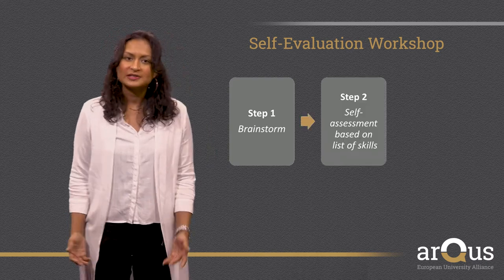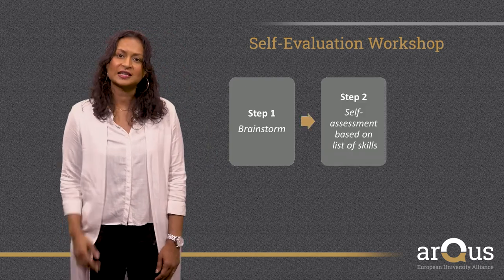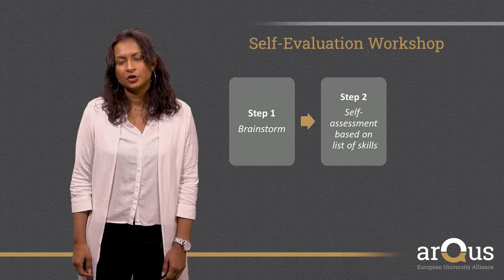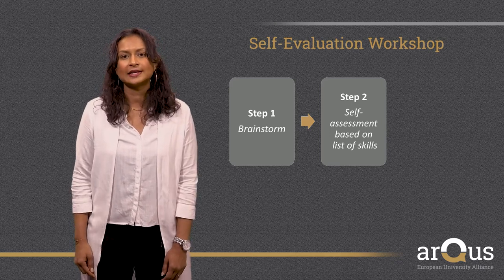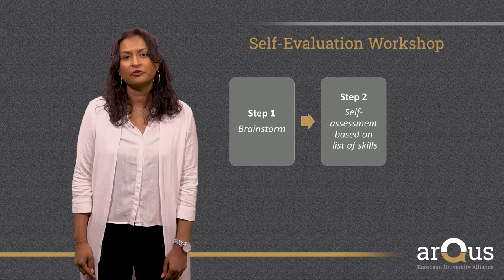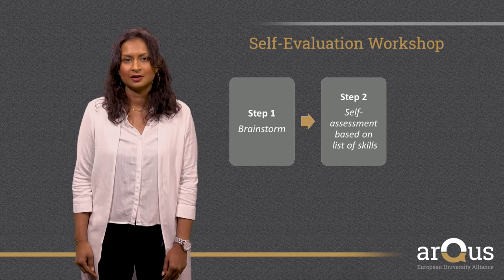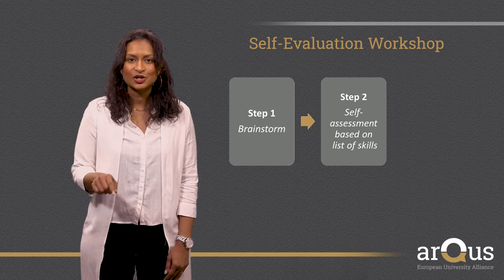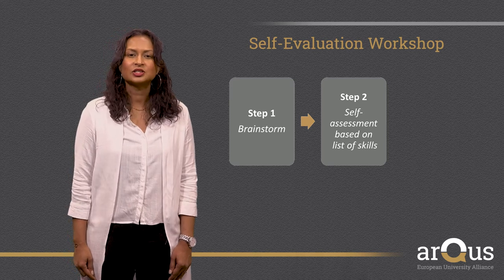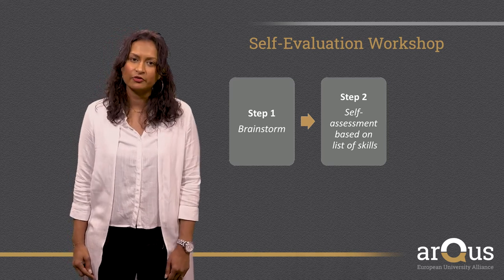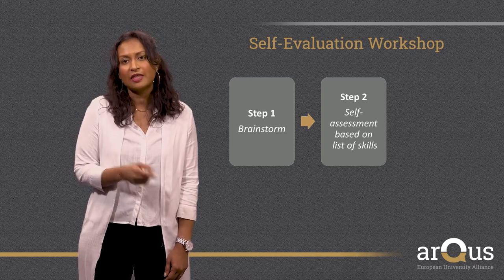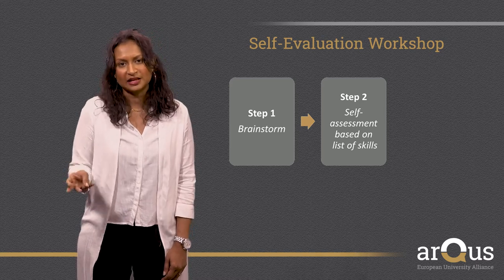Step two: present the list of skills that you think will be important during the program. You have seven selected skills examples in the entrepreneurial framework introduction document. At this stage, do not show them the framework yet — ask the students to self-assess their level for each of the selected skills, with one being basic and three being expert.